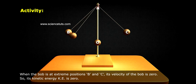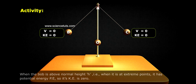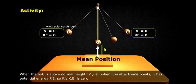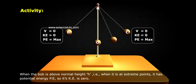When the bob is at extreme positions B and C, its velocity is zero, so its kinetic energy, KE, is zero. When the bob is above normal height H, that is, when it is at extreme points, it has potential energy, PE.